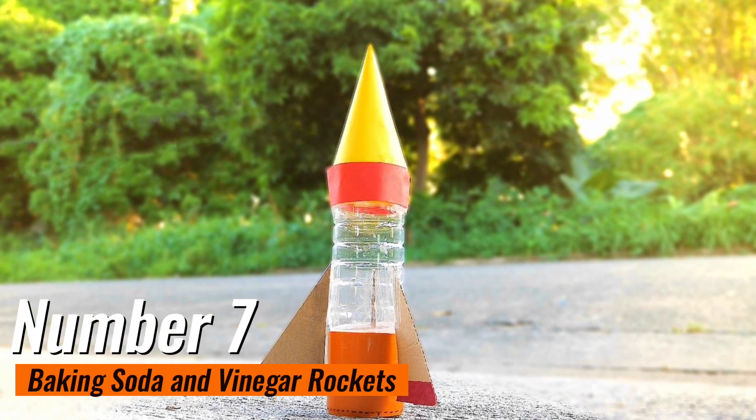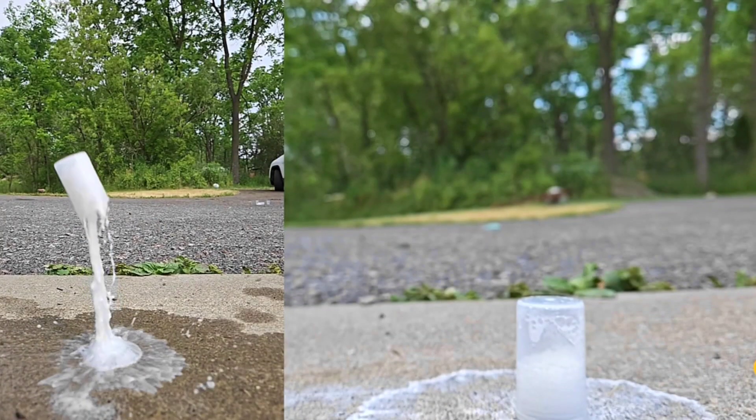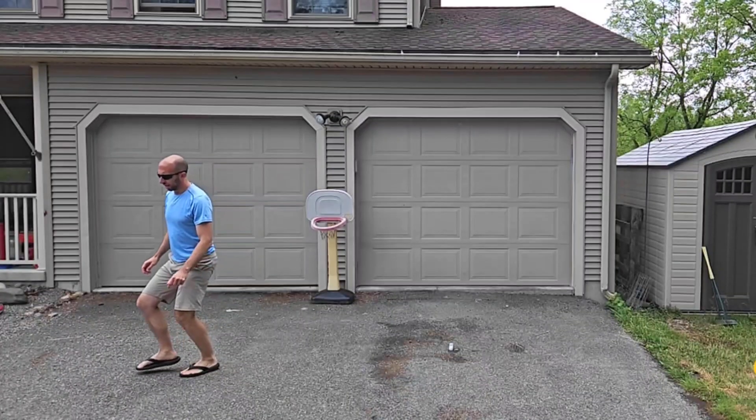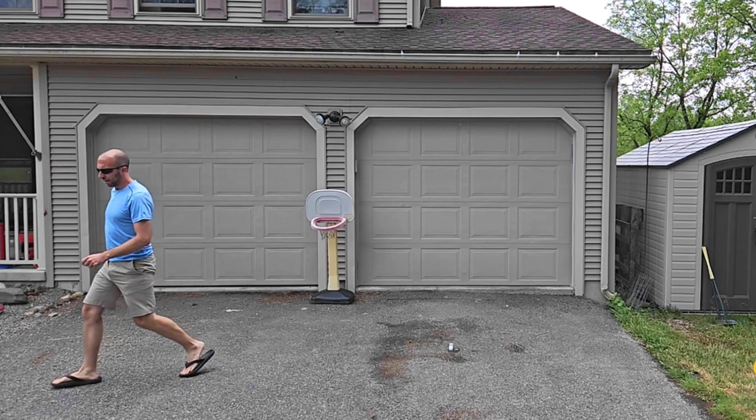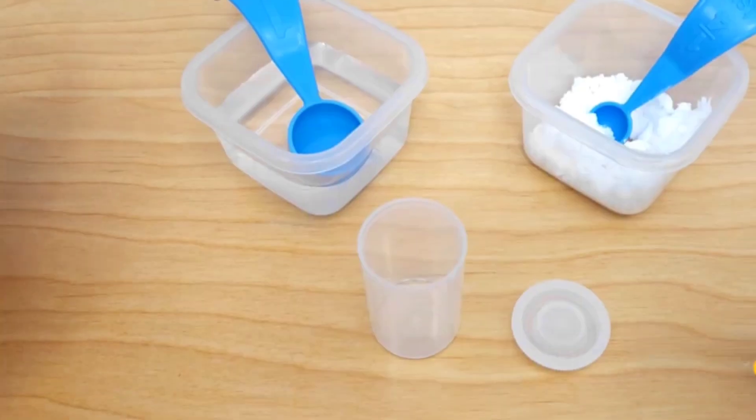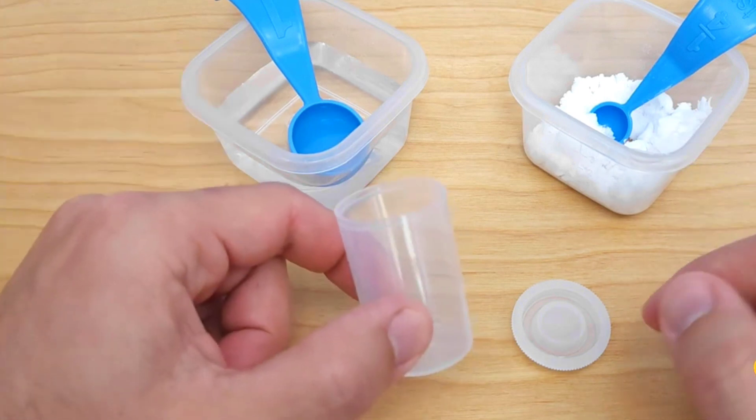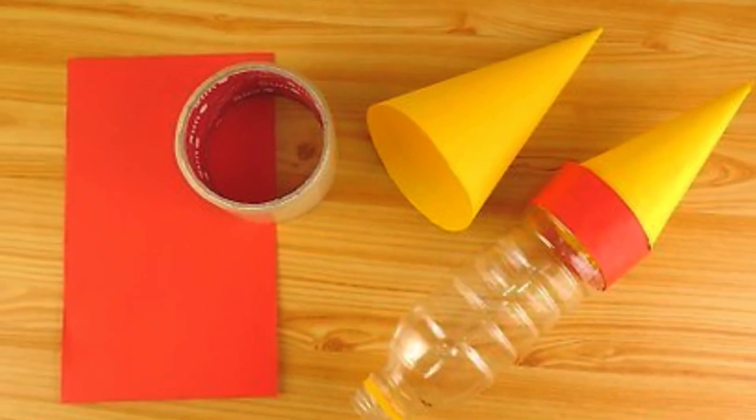Number 7. Baking Soda and Vinegar Rockets. The baking soda and vinegar rockets experiment is an explosive and thrilling science activity that will leave kids in awe. To conduct this experiment, you will need a film canister or a small plastic container with a tight-fitting lid, baking soda, vinegar, and safety goggles for eye protection.